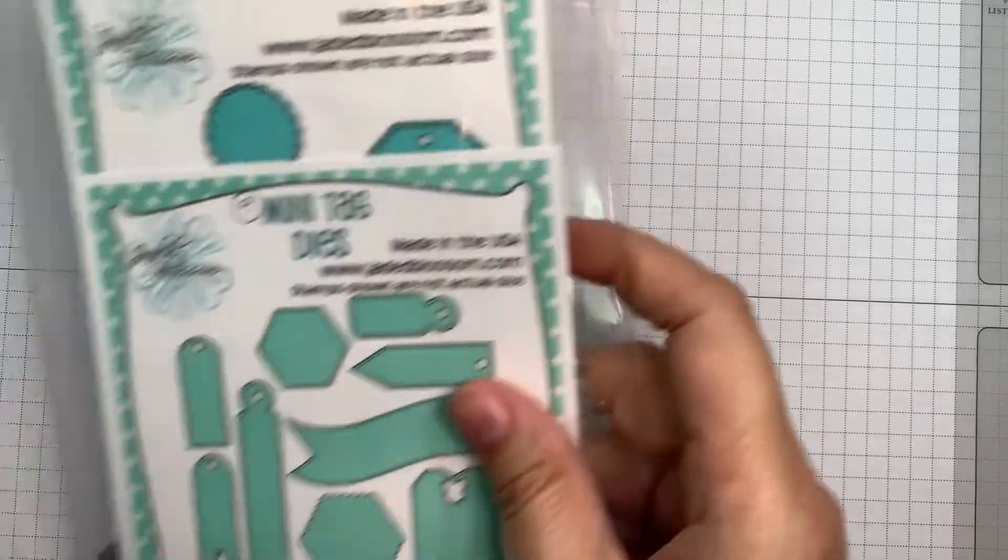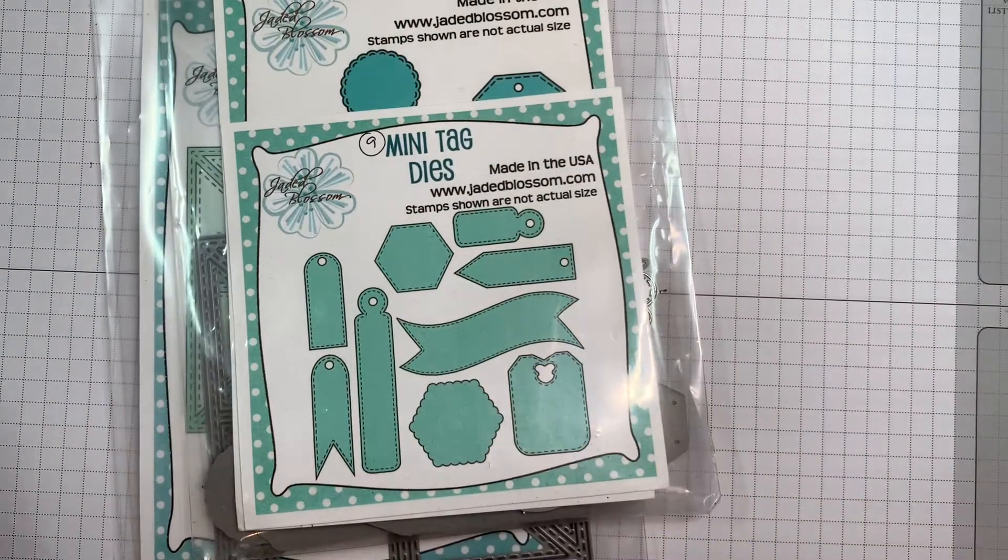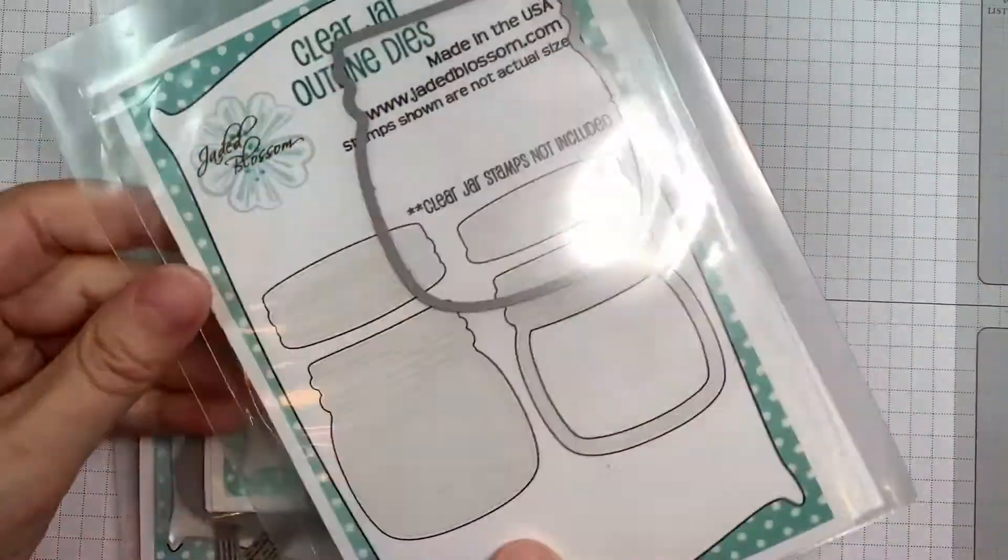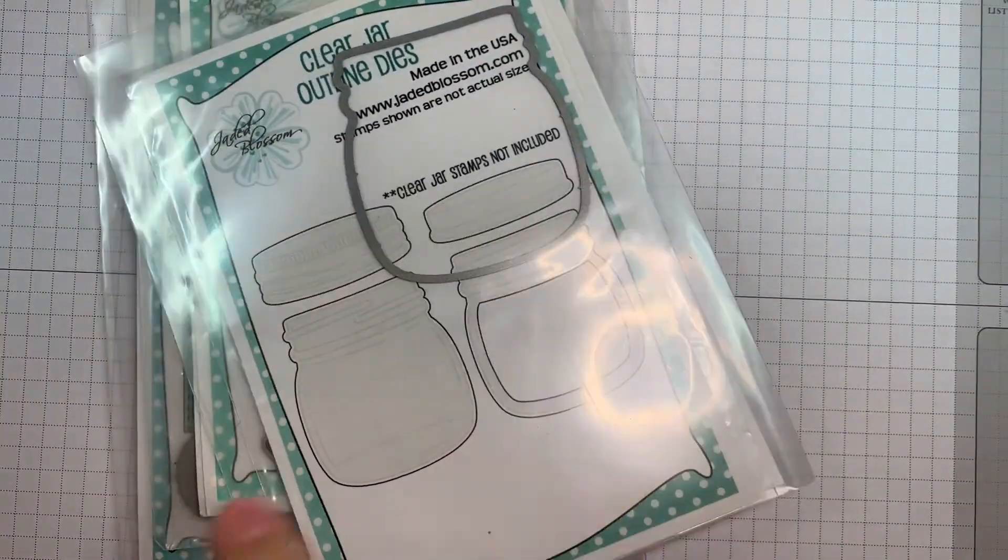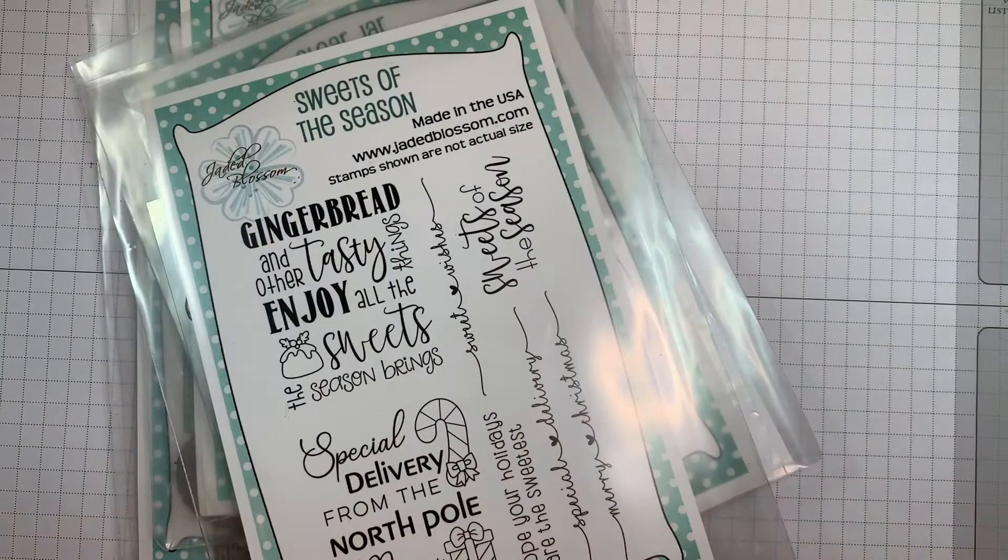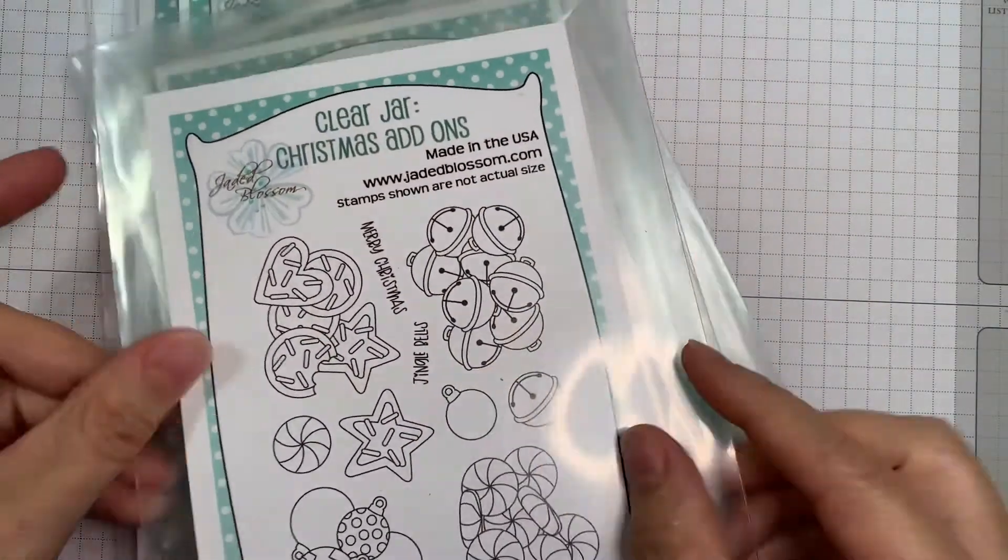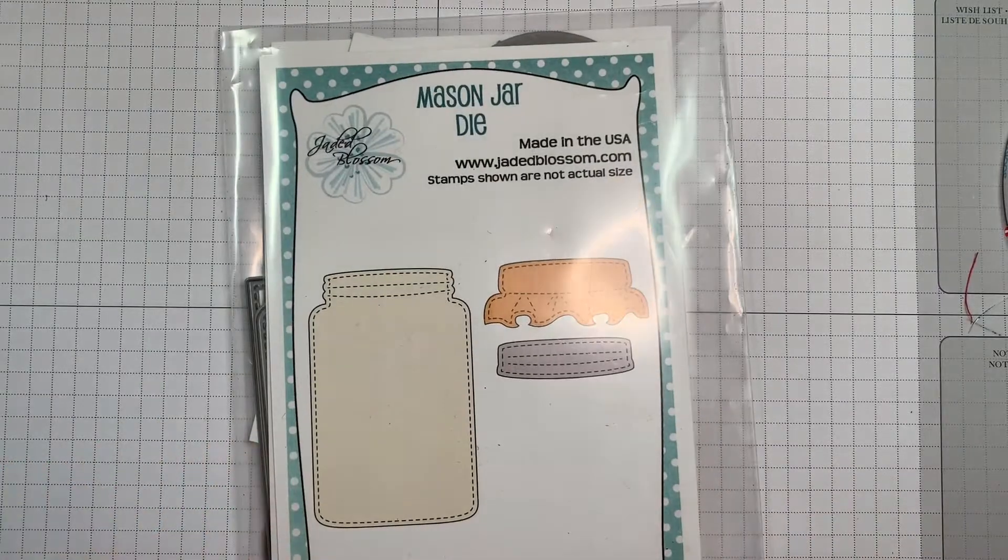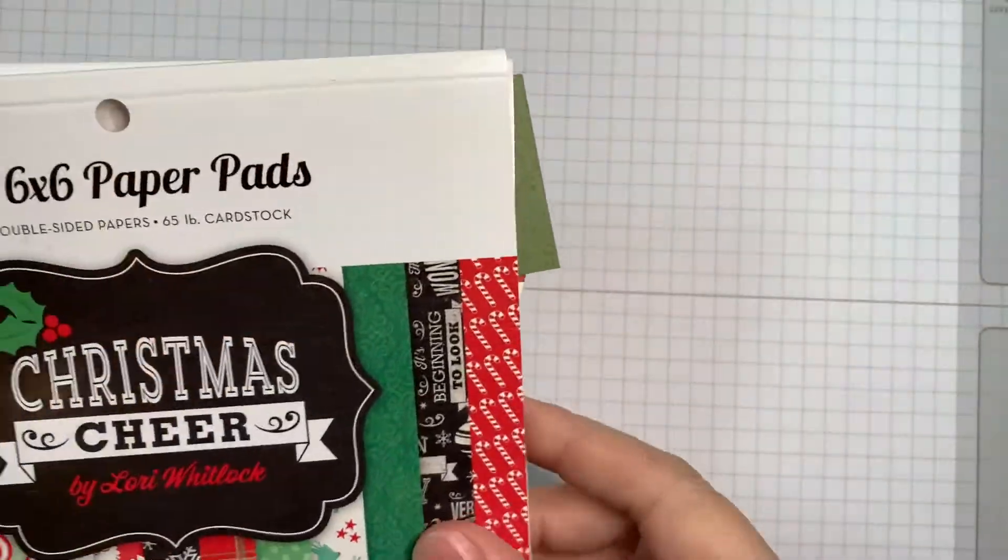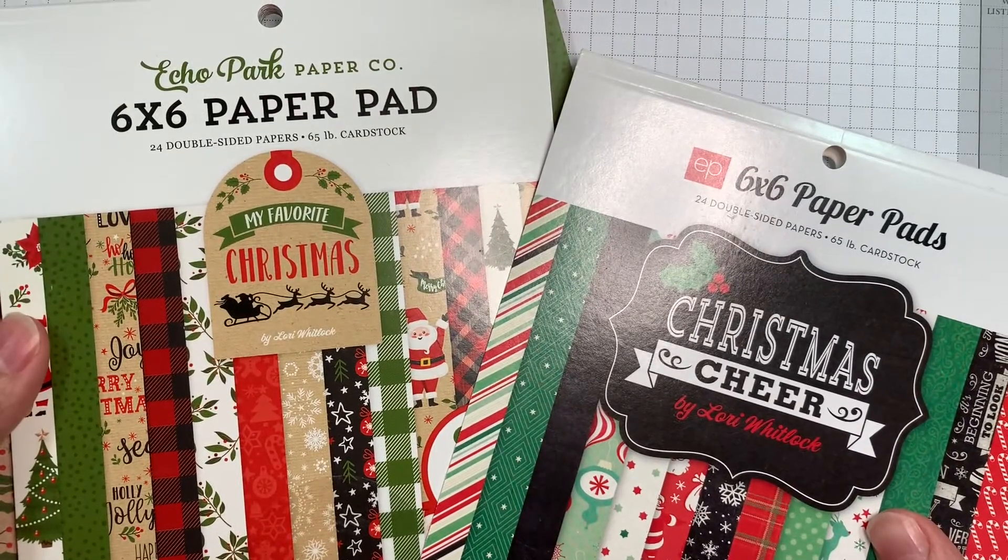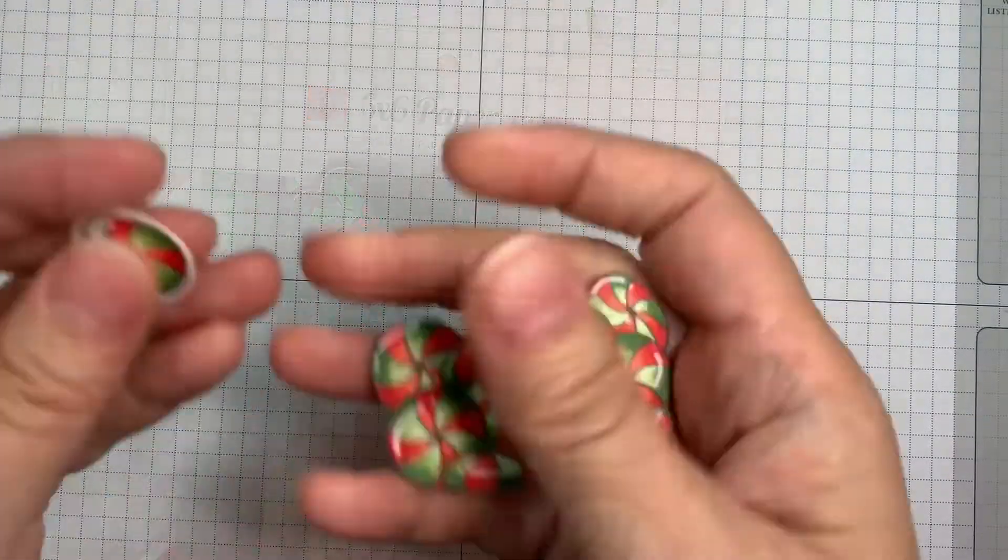I am using Jada Blossom's Triangle Square Matte Dies along with our Mini Tag Dies 2, our Clear Jar Stamp Set and Outline Dies, our Sweets of the Season Stamp Set and our Clear Jar Christmas Add-ons and Mason Jar Die. I'm also using Echo Park's Christmas Cheer and My Favorite Christmas, but you could use any pad for this.